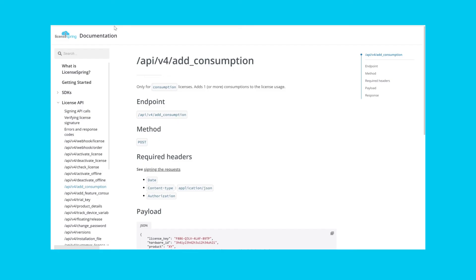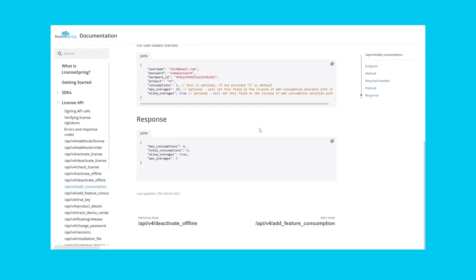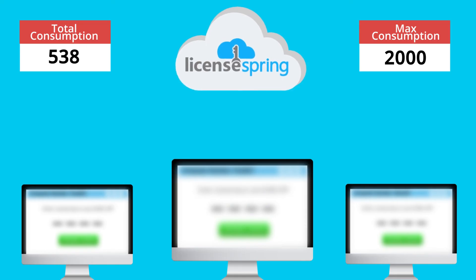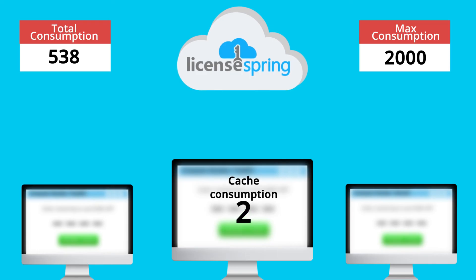Once your license has been issued and activated by the end user, the software application needs to call the add consumption method for the consumption license, or add feature consumption to increment the total amount that a resource has been used. The server will return the total and the maximum consumptions on license checks. These allowances can be shared across all devices using the same license. For advanced implementations such as pooling resources or caching metered usage prior to sending them to the server, please contact customer support for implementation instructions tailored to your use case.